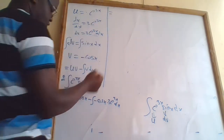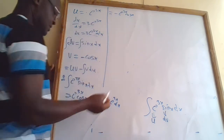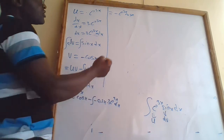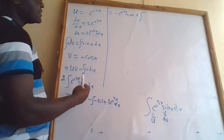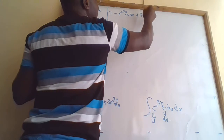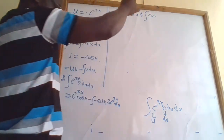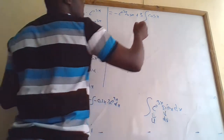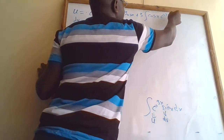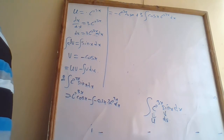This equals −e^(3x)·cos(x). Then minus times minus gives positive, so it becomes plus. Taking the constant 3 out, we have plus 3 times the integral of cos(x) · e^(3x) dx.